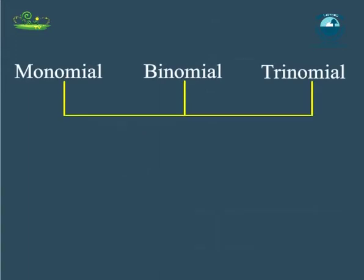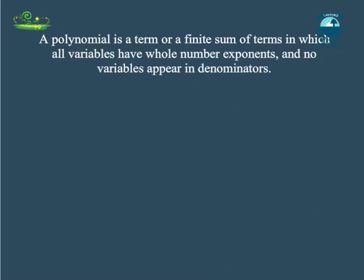All the monomials, binomials and trinomials have a common name that is polynomials. A polynomial is a term or a finite sum of terms in which all variables have whole number exponents and no variables appear in denominators. A polynomial may contain any number of terms, one or more than one.